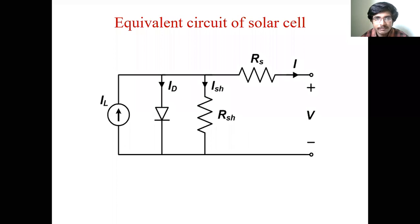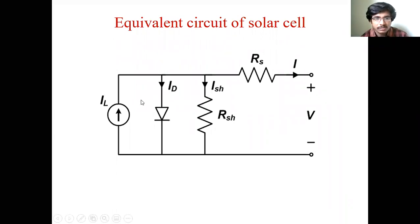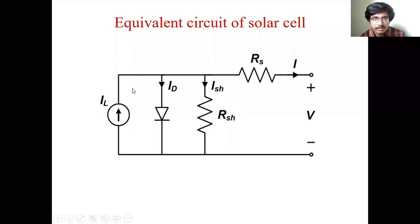This is the equivalent circuit of a solar cell. Here is IL, the diode current ID, and also ISH. The load current is IL minus ID minus ISH.